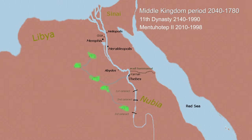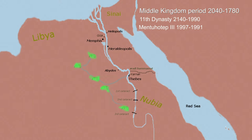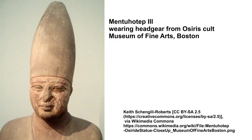His son Mentuhotep III took a military excursion into the Wadi Hamamat, a dry riverbed that runs from the Nile River just north of Thebes over to the Red Sea. They were able to set up a trade outpost at the Red Sea there. There is not much record about who they actually traded with, but it was reaching towards the Red Sea trade.